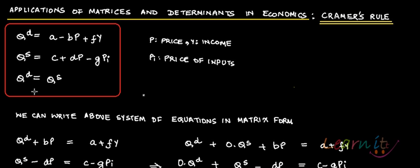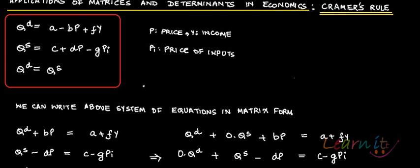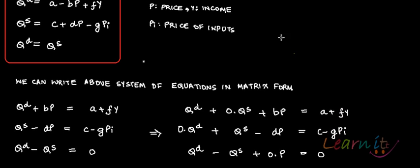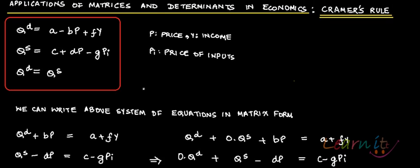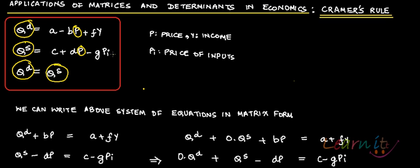We will write this system in matrix form. The endogenous variables in this system are QD, QS, and P — all determined within the system. Everything else is exogenous: Y and PI are exogenous variables.